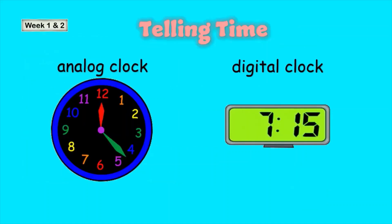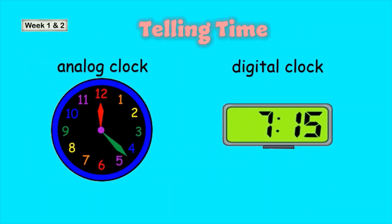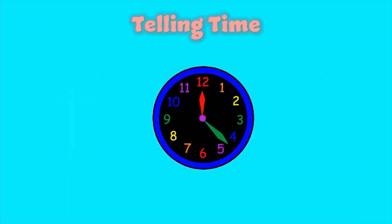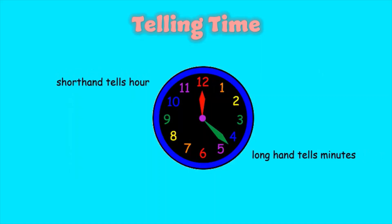This is an analog clock. This is a digital clock. The shorthand tells the hour, the longhand tells the minutes. 60 minutes equals 1 hour.